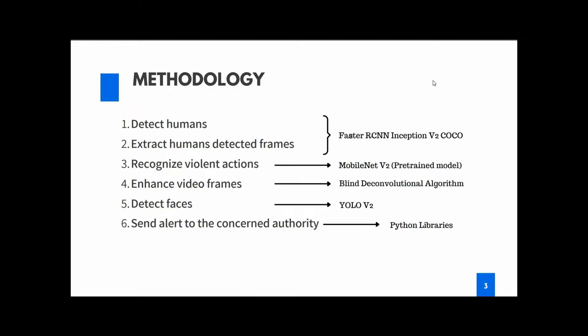For step four, we'll be enhancing the video frames in which violent actions have been recognized. For this we'll be using the blind deconvolution algorithm, which is a relatively new algorithm for image enhancement. It helps enhance an image where no particular data is known about the image, which is the case in surveillance cameras. Step five involves detecting faces from the enhanced video frames, for which we'll be using the YOLOv2 algorithm — the You Only Look Once algorithm trained using the COCO model for classifying mainstream objects like faces.